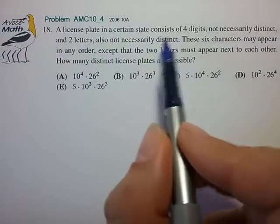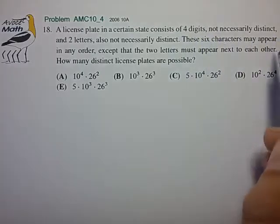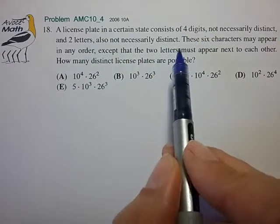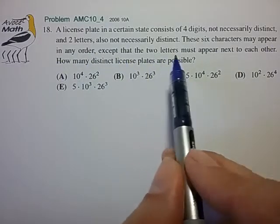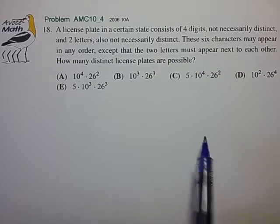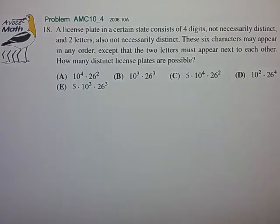A license plate in a certain state consists of four digits, not necessarily distinct, and two letters, also not necessarily distinct, and these six characters may appear in any order except the two letters must appear next to one another. How many distinct license plates are possible?